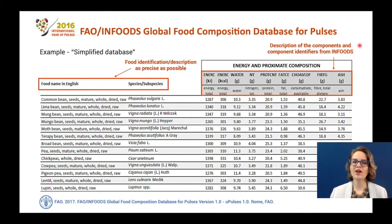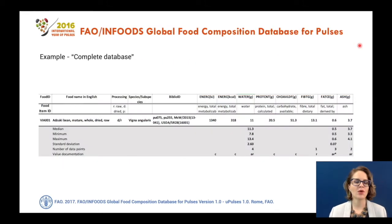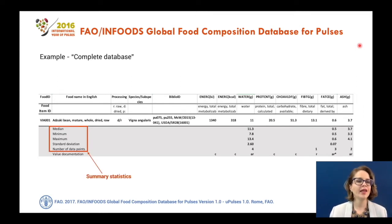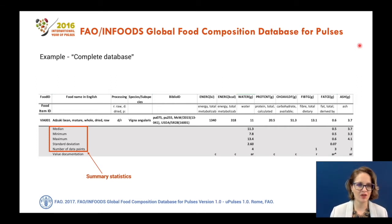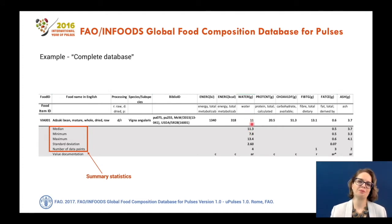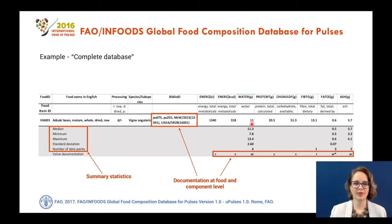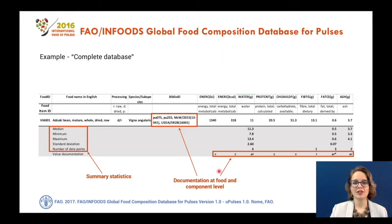Sometimes we also have more detailed information in a complete database. In addition to the information already presented, we also have summary statistics: in addition to the average value for each component, we have the median, the minimum and maximum values, the standard deviation, and the number of data points used to calculate the average value presented in the simplified database. We also have some extra documentation at food level — all the references used to make the average values — and also documentation at component level.